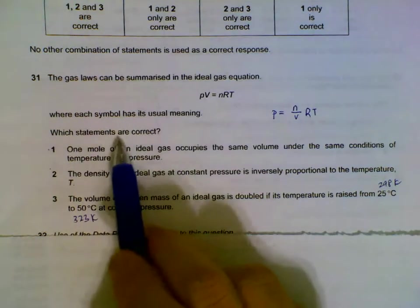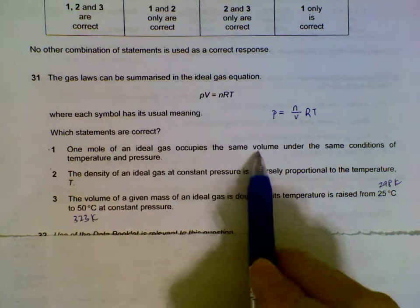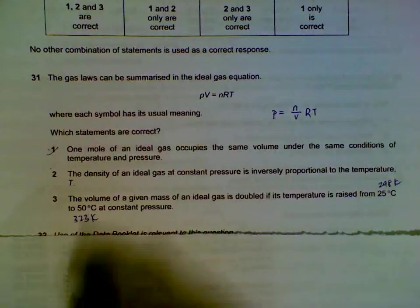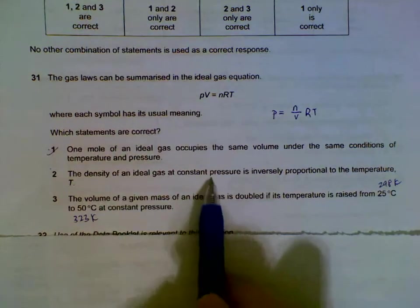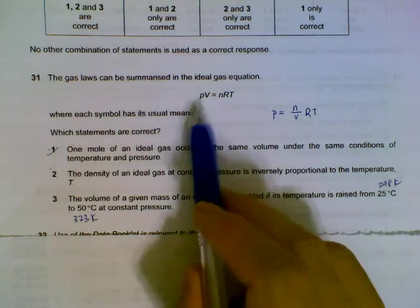Question 31: Which of the statements are correct based on the gas laws? One mole of ideal gas will occupy the same volume under the same conditions—this is true. Density at a constant pressure is inversely proportional to temperature, so PV = nRT.